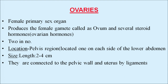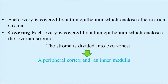The ovaries have a length of 2 to 4 centimeters. They are connected to the pelvic wall and uterus by special ligaments. Each ovary is covered by a thin epithelium which encloses the ovarian stroma, which is divided into two zones: a peripheral cortex and an inner medulla.